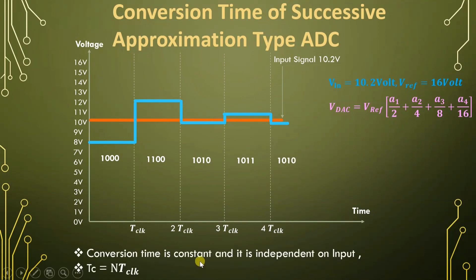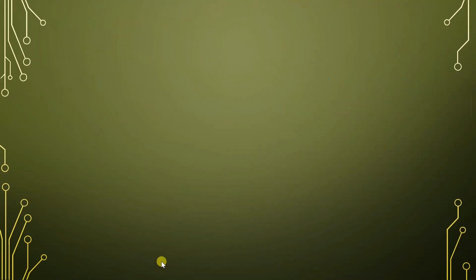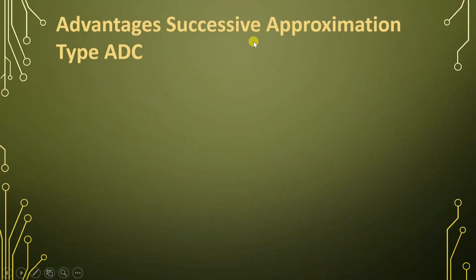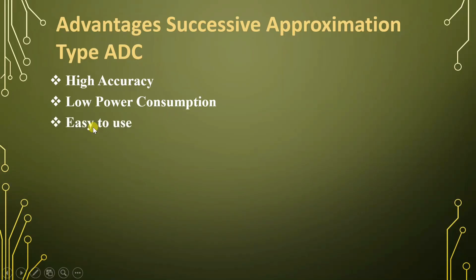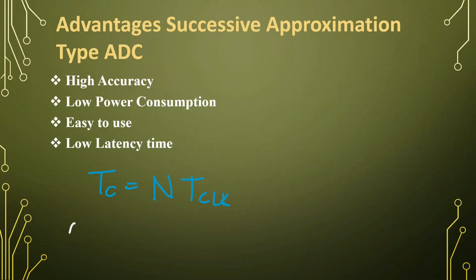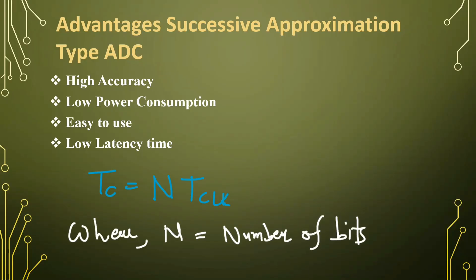The conversion time period is constant and is independent of the input signal: conversion time = number of bits × T_clock. Observing this successive approximation type ADC, the conversion time period is constant, it does not depend on the input signal, it provides very high accuracy, lower power consumption, it is easy to use, and it has low latency time. That is why this successive approximation type ADC is very useful, taking N bits × T_clock time to convert one analog sample into digital data. This is all about successive approximation type ADC. I hope you understood this video. Thank you for watching. Please do give your valuable suggestions, as your suggestions help me make future videos that solve students' queries.